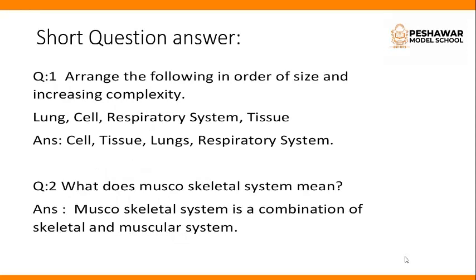Short question answer, question number 1: arrange the following in order of size and increasing complexity — lung, cell, respiratory system, tissue. We will arrange them from simple to complex.